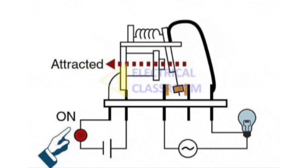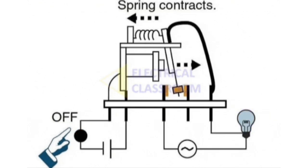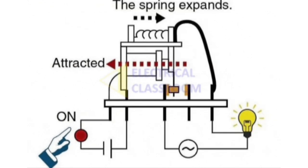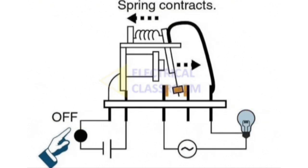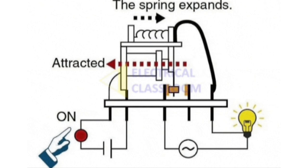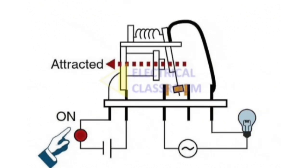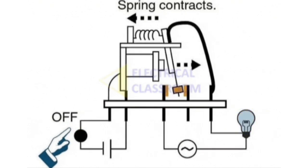Relay Contact Types. Normally Open: Default state is off, closes when relay is activated. Normally Closed: Default state is on, opens when relay is activated. Common: The central connection that switches between normally open and normally closed.